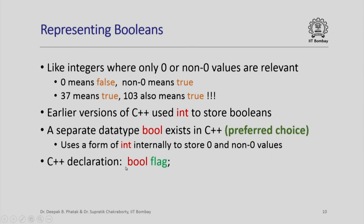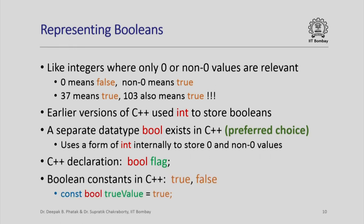To declare a Boolean in C++ you write bool followed by the variable name, for example bool flag. The Boolean constants in C++ are true and false — false is guaranteed to be 0, and true is guaranteed to be something other than 0. You can define constant Boolean values such as const bool true_value = true, meaning the value of true_value cannot be changed in your program.